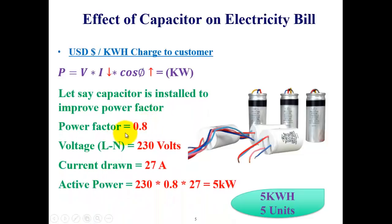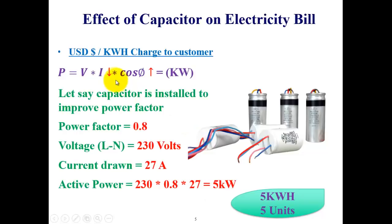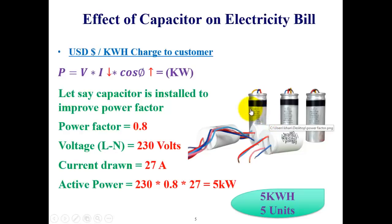When you install the capacitor, it improves the power factor from 0.6 to 0.8. The current drawn by the house is now reduced to 27 amperes. But multiplying all the quantities, the active power remains the same — 5 kilowatts. Adding the capacitor improves power factor and reduces current, but the overall active power stays at 5 kilowatts. Over one hour, the house still consumes 5 units of electricity — absolutely no difference in consumption, and therefore no reduction in electricity bill for single-phase or three-phase domestic supply.